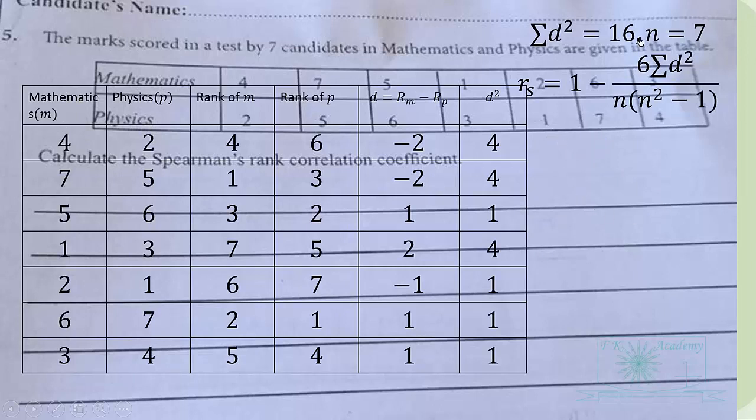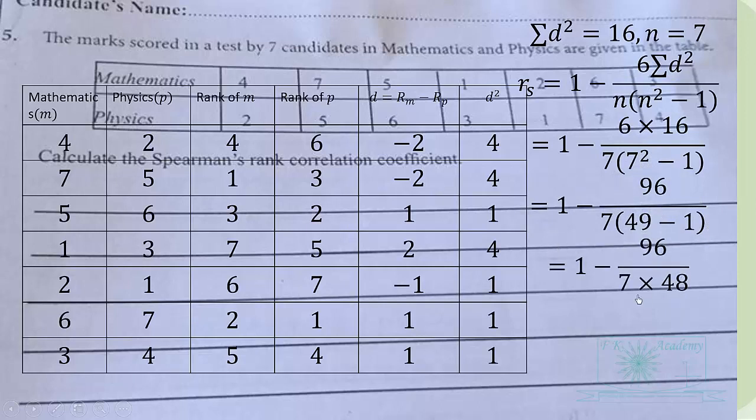And we can now substitute these variables into the equation or into this formula to get 1 minus 6 times 16 all over 7 times 7 squared minus 1. 49 minus 1 will give you 48. 48 to go into 96 is 2 times, so we have 1 minus 2 over 7 which is 5 over 7 or 0.7143. So that is the Spearman's rank correlation coefficient.